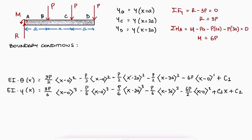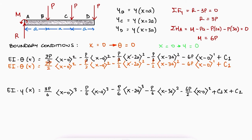To find C1 and C2, we use the boundary conditions. Since A is the wall, both the deflection and the slope will be 0, and point A is located at x equal to 0.